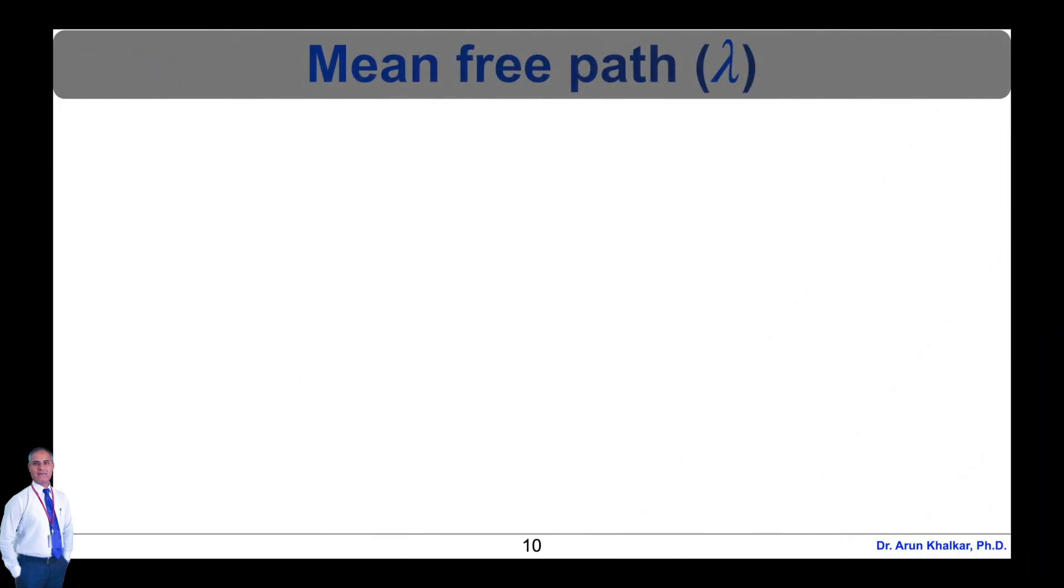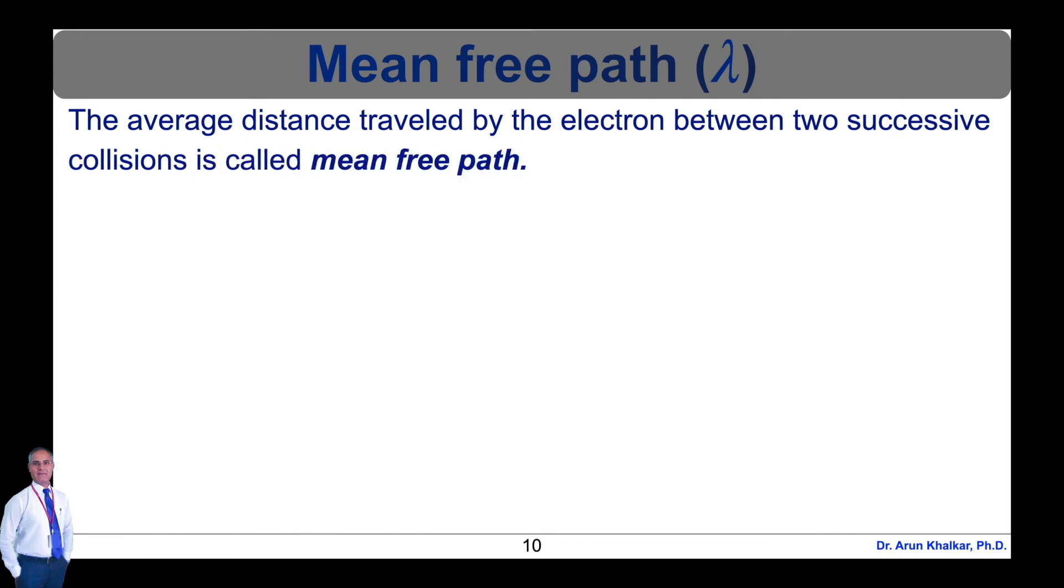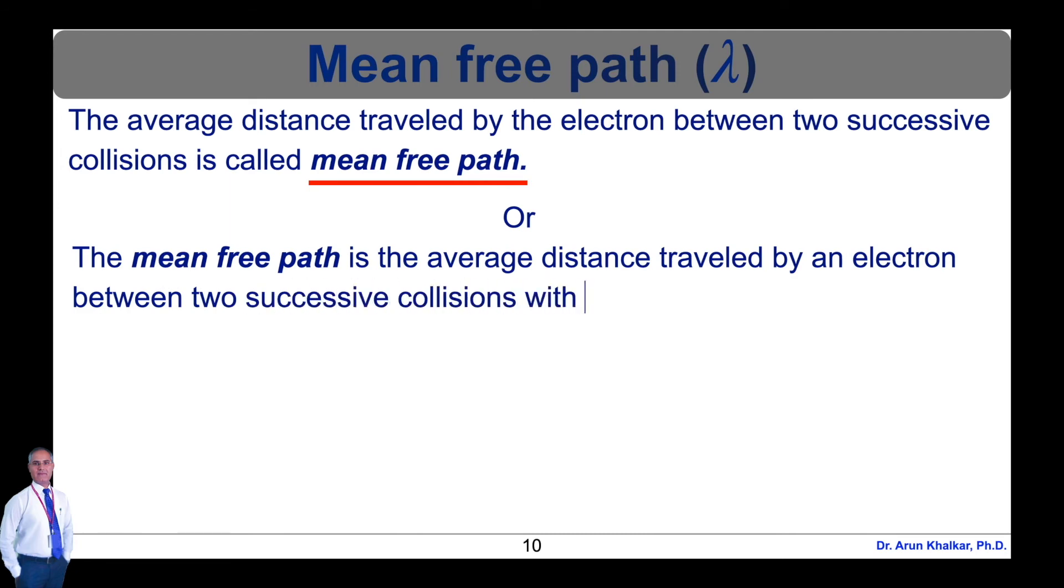Now let's see the mean free path denoted by lambda. Free electrons in a metal are continuously moving in all directions and with various speeds. They frequently collide with one another. Therefore, they move in straight line with constant speeds between two successive collisions. The distance travelled by the electron between two successive collisions is called as free path.